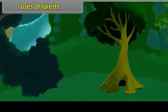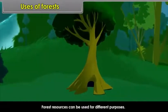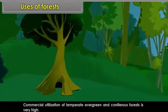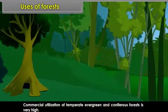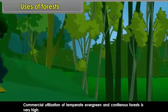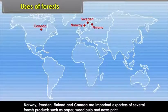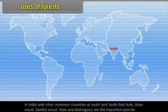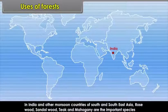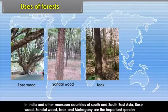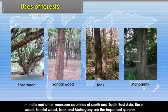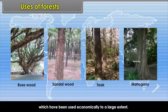Uses of Forests: Forest resources can be used for different purposes. Commercial utilization of temperate, evergreen and coniferous forests is very high. Norway, Sweden, Finland and Canada are important exporters of several forest products such as paper, wood pulp and newsprint. In India and other monsoon countries of South and Southeast Asia, rosewood, sandalwood, teak and mahogany are the important species which have been used economically to a large extent.